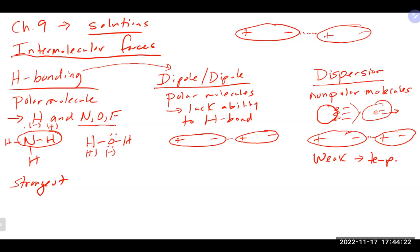Dispersion forces are the weakest type of intermolecular force. These intermolecular forces affect boiling points and melting points. A substance with a really strong intermolecular force will have a higher boiling or melting point because its molecules are held together tightly, requiring more energy to separate them. The opposite is true for dispersion forces — they're relatively weak, so substances using them can enter the gas phase easily.